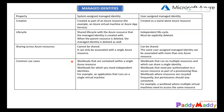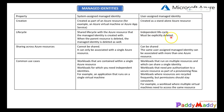Now let's look at managed identity-specific properties for system assigned versus user assigned. For system assigned, it creates an Azure resource — for example, a virtual machine or web app — for the managed identity. For user assigned, it creates a standard Azure resource. Regarding lifecycle: for system assigned, there is a shared lifecycle with the Azure resource the managed identity is created within. When the parent resource is deleted, the managed identity is automatically deleted too. But for user assigned, the managed identity lifecycle must be explicitly deleted — you need to go and delete it explicitly.